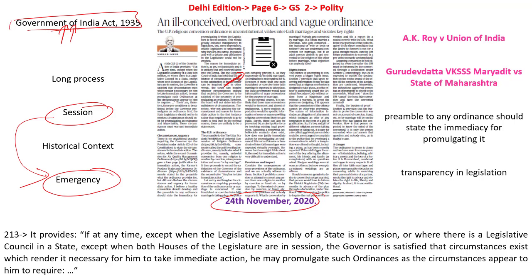We also have to realize the historical context. Back in the 1950s and 60s, there was limited transportation. Members of Parliament from Kerala, Tamil Nadu, or the northeast would require a day or two to reach Delhi. If there was an emergency during that period, the government had to bring up a law. As of now, this historical context does not apply because even a person from Kerala or Tamil Nadu can reach Delhi within three to four hours by flight. But back then, limited transportation was also a reason why ordinance power was given to the government.